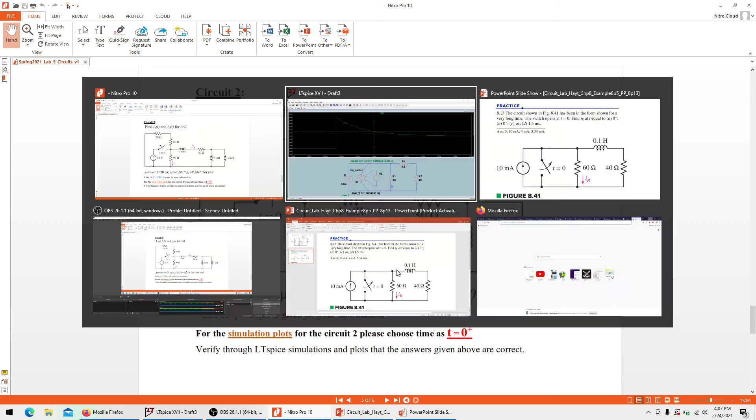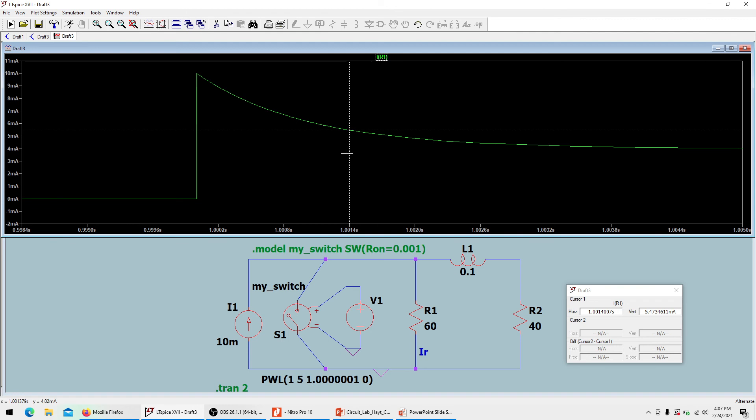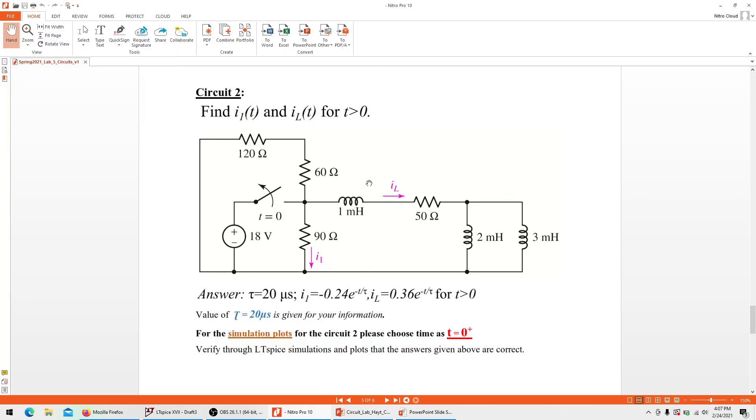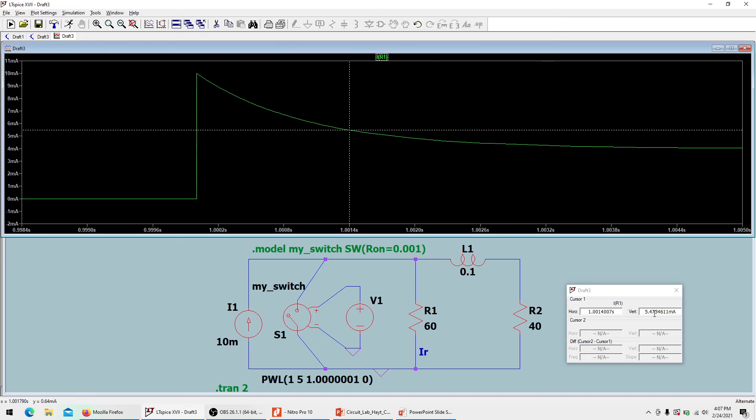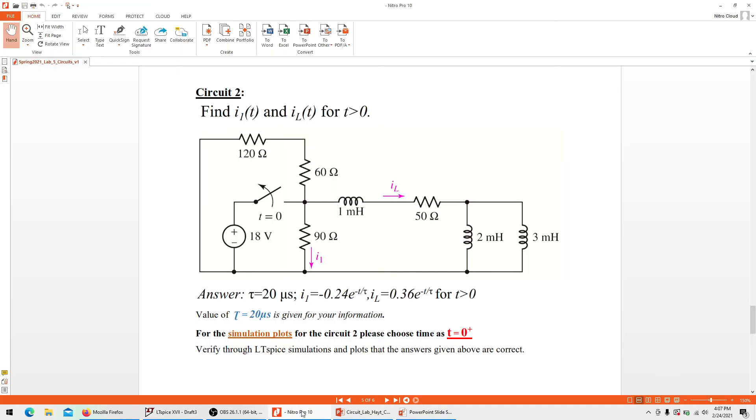We quickly take any time value, find out the current within our plot, take that time value t equal to whatever it is, put that value here, and solve this equation. Then we have to make sure that i1 is the same as it has been here. That's all, nothing more than that to solve this circuit.